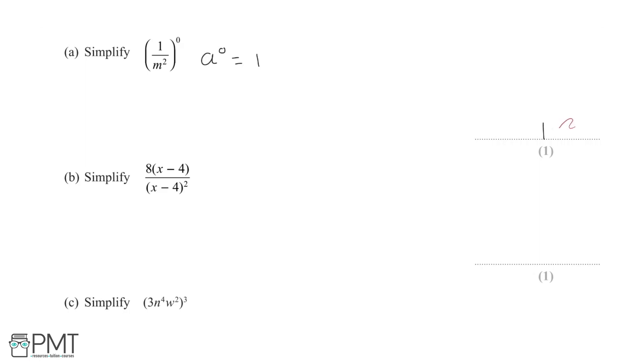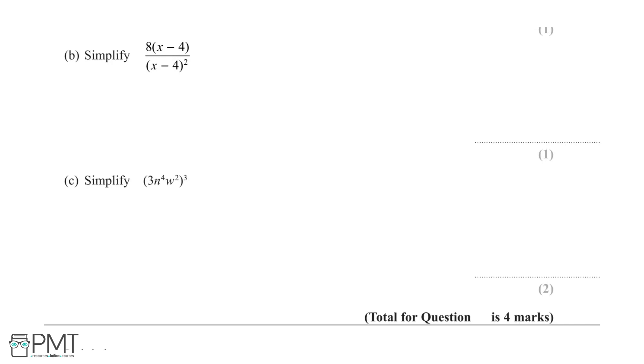You get 1 mark for this part and 1 mark for the correct final answer. Part b has asked us to simplify 8(x-4)/(x-4)² for 1 mark.